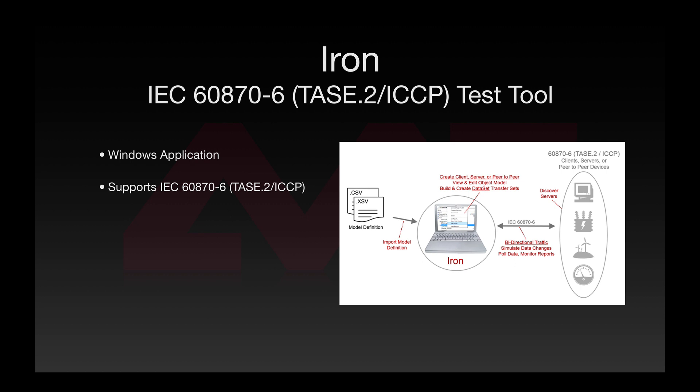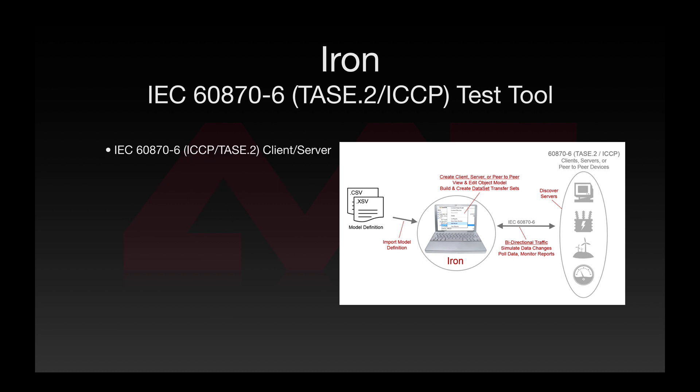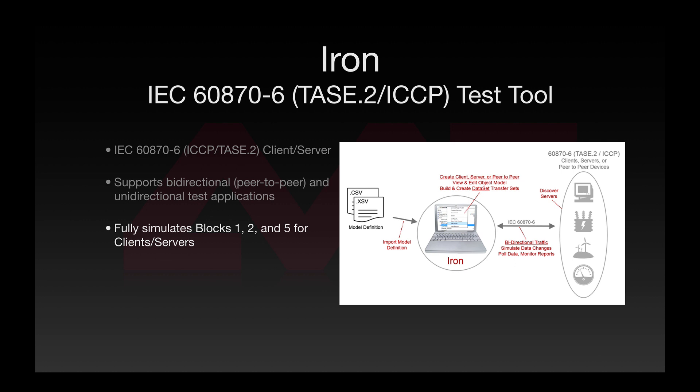IRN is a Windows application that supports IEC-60870-6, also called TASI-2 or ICCP. IRN can act as an IEC-60870-6 client and server. It supports bi-directional or peer-to-peer and unidirectional test applications. It fully simulates blocks 1, 2, and 5 for clients and servers, and supports versions 1996.8 and 2000.8 of the specification.